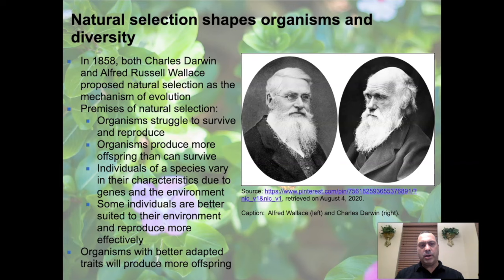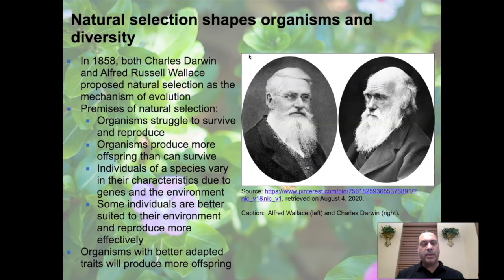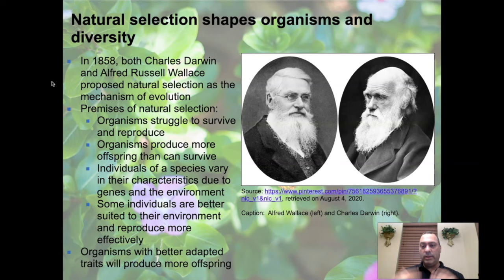Our understanding of natural selection wasn't really worked out until fairly recently in human history. It came about on the shoulders of Charles Darwin, who wrote important treatises on the origin of species — considered one of the most important texts in all of biology. Alfred Russell Wallace independently came up with the same idea, and in 1858 they released the concept of natural selection together.